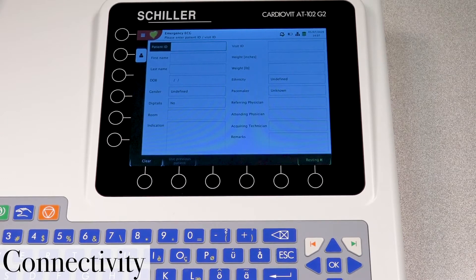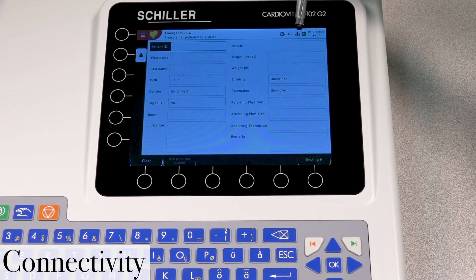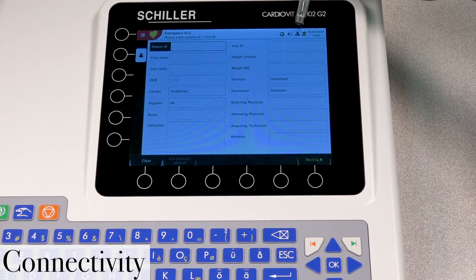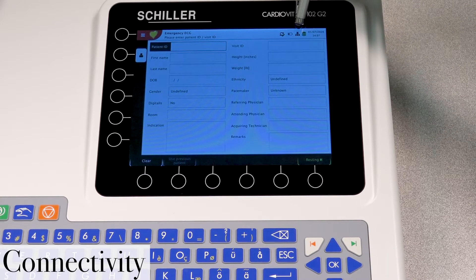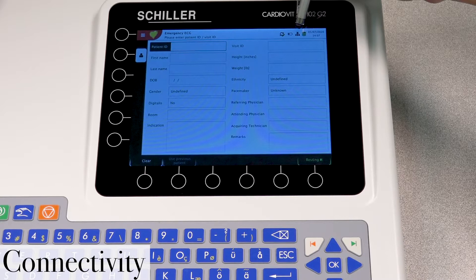So the first thing you want to look at is this icon here at the very top. Now this icon will let you know whether or not you're connected either to a Wi-Fi network or to the server or if you're not. Now in this case, if you notice, you have an X here. Now that X indicates that you're not connected to anything.